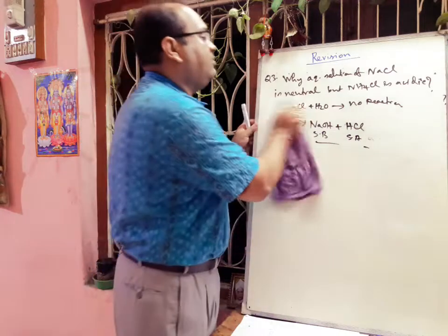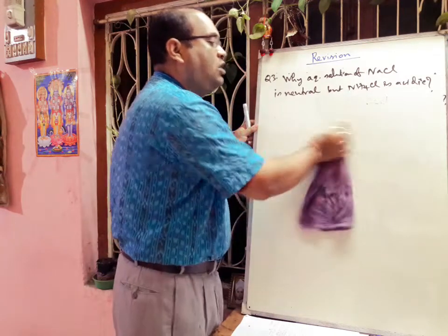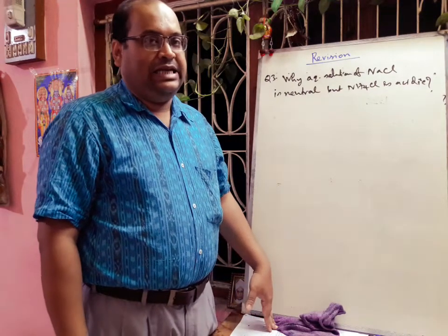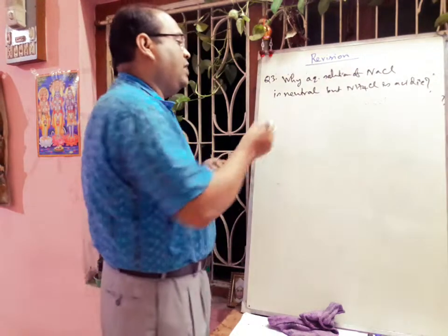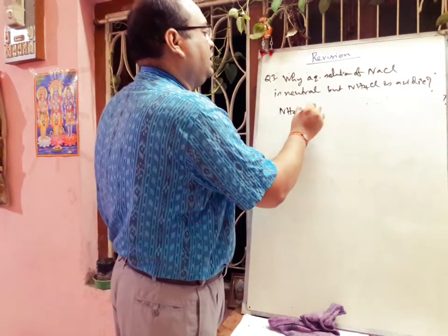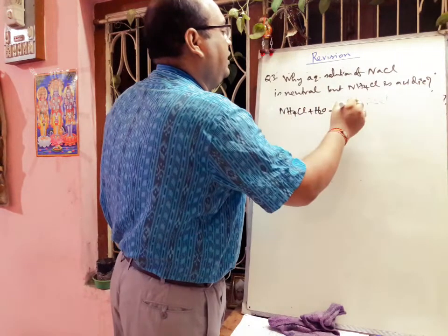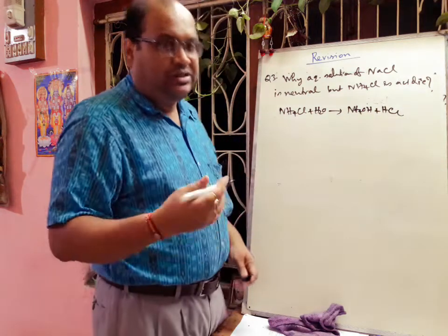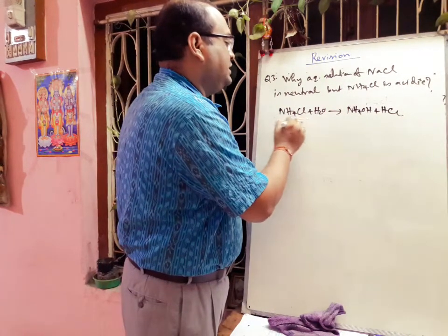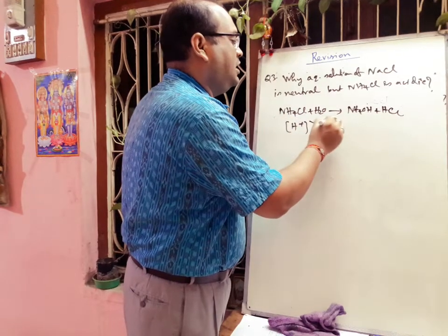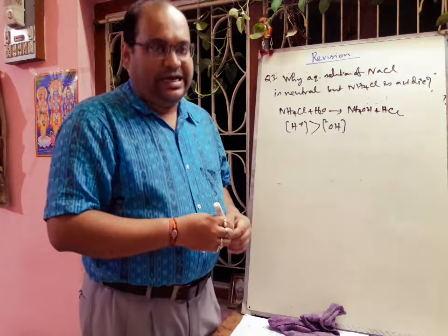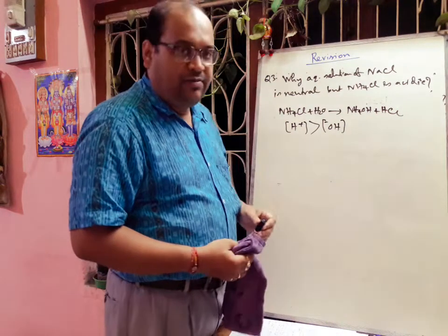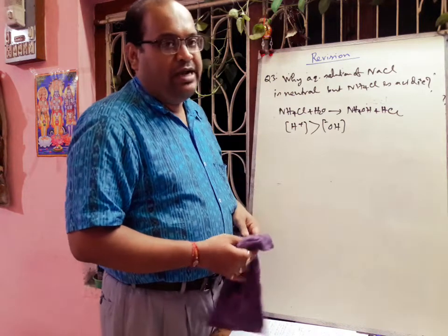In contrast, ammonium chloride is a salt formed from a strong acid HCl and a weak base ammonium hydroxide. When ammonium chloride is dissolved in water, it forms NH₄OH plus HCl. The concentration of H⁺ is greater than OH⁻, so the solution is acidic. That is why NaCl is neutral but ammonium chloride is acidic.